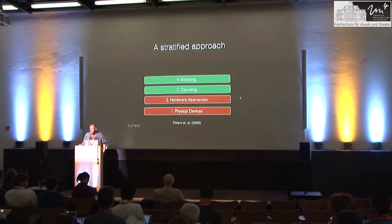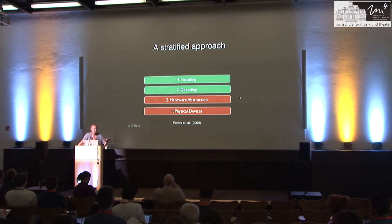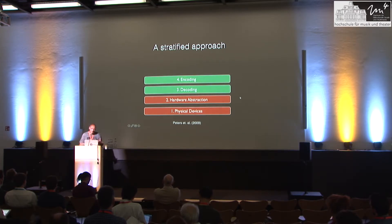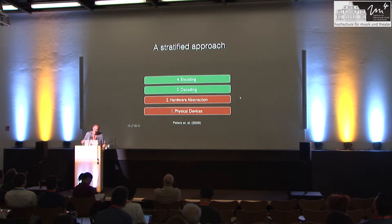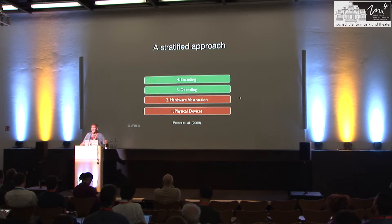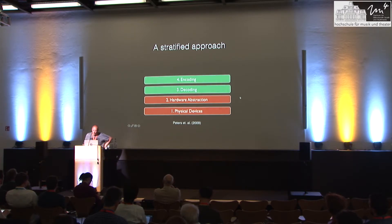Next come the two layers that decide what sound goes to which speaker — distributing the sound by encoding and then decoding. For some spatialization techniques this takes place in one and the same process, like vector-based amplitude panning, while in ambisonics there's an encoding into B-format first and then the decoding afterwards.